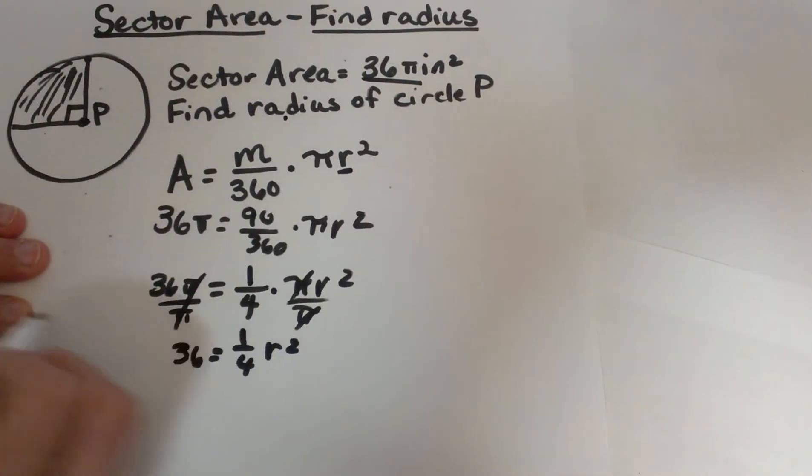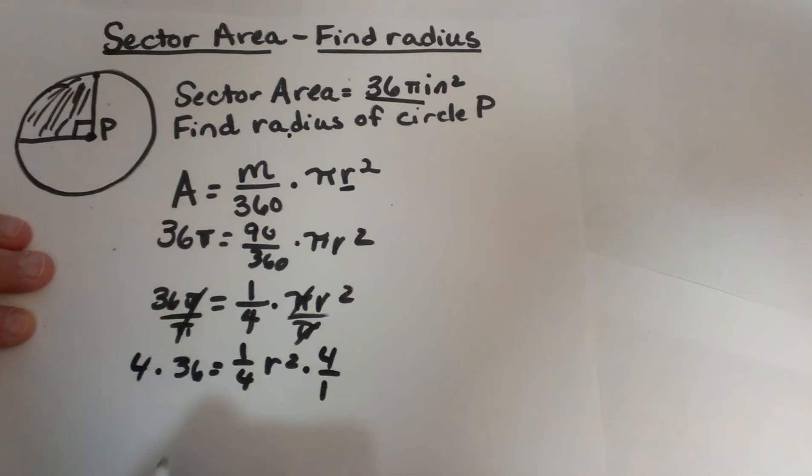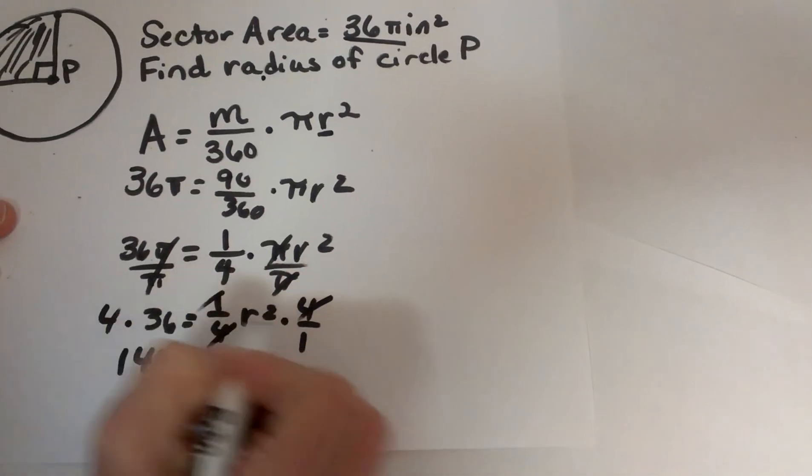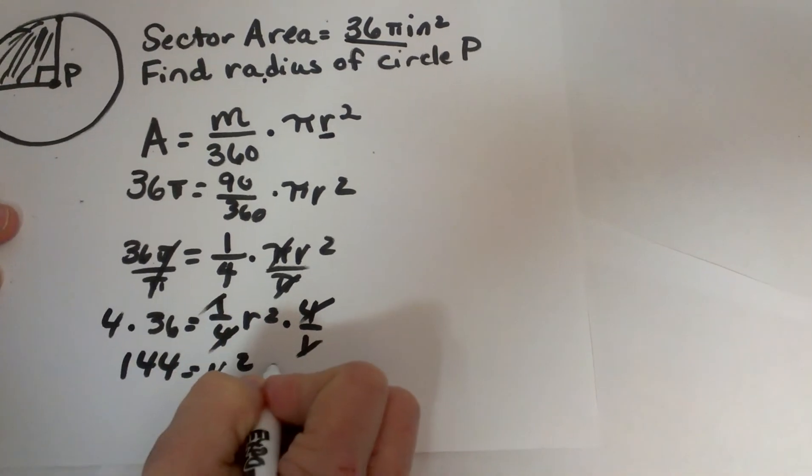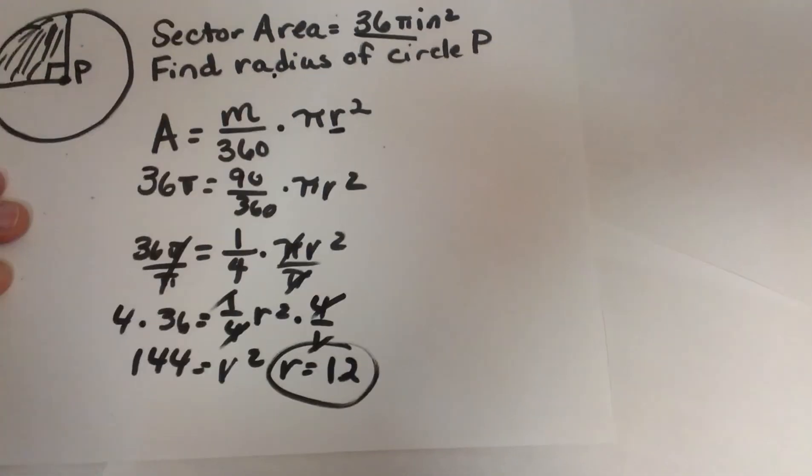To get rid of our fraction I am going to multiply by its reciprocal. So I am going to multiply both sides by four. I get 144 equals, this all cancels out, r². So the radius is 12 and that is how I find my radius.